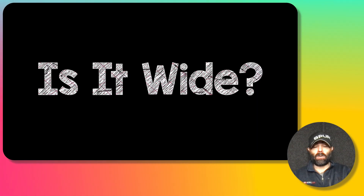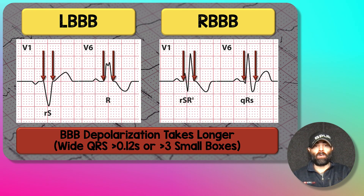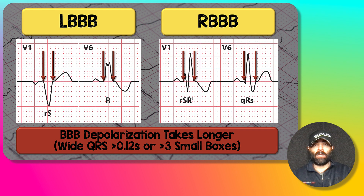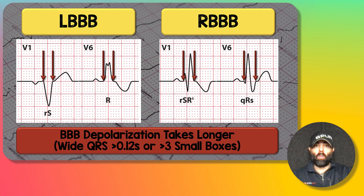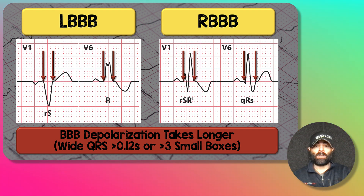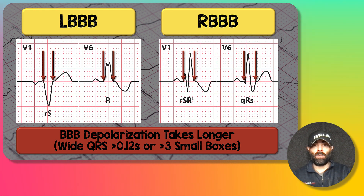Now let's talk about bundle branch blocks. The first question you need to ask yourself is: is the QRS wide? In left bundle branch block the left bundle is blocked; in right bundle branch block the right bundle is blocked. But first — is the QRS wide? By definition, a block causes a delay in depolarization, which is why you get a wide QRS, defined as greater than three little boxes or greater than 0.12 seconds. Each little box is 0.04 seconds on an EKG running at 25 millimeters per second.